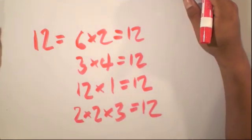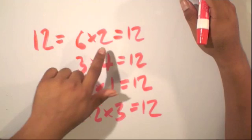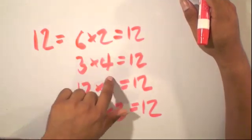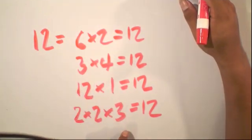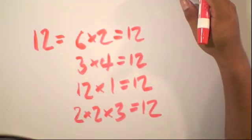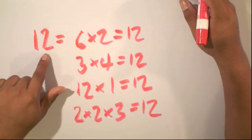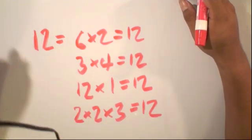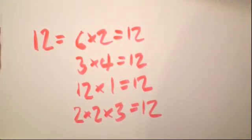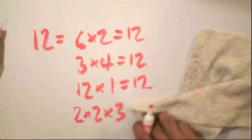One important thing to note here is that we call each of these factors. Specifically, they are factors of the number 12. So this is the notion of factoring.